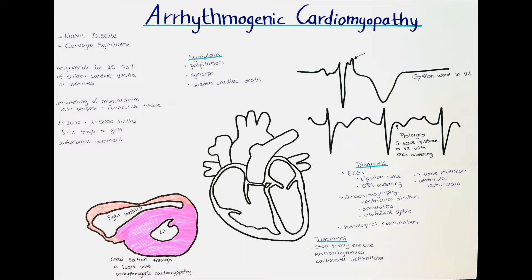So how do we diagnose it? There are several different tests that we can do. Let's first talk about the ECG. The most specific sign, which is seen in around 50% of patients, is the epsilon wave — a wave right at the end of a QRS complex. We can also sometimes observe a localized QRS widening in V1 to V3, with a QRS complex duration of more than 110 ms. In leads V1 to V3, we can also sometimes observe a T-wave inversion in the absence of a right bundle branch block, seen in around 85% of patients. Patients also often have episodes of ventricular tachycardia, which are life-threatening and should not be mistaken with supraventricular tachycardias.